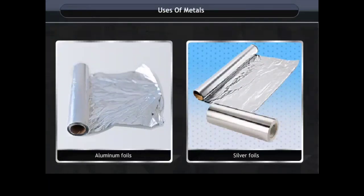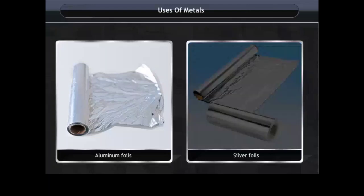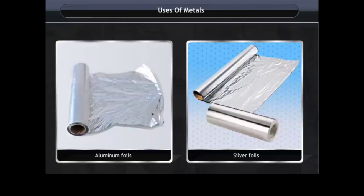Metals are malleable, hence they can be hammered into very thin sheets. For example, silver and aluminum foils are made by hammering these metals. Silver foils are used for decorating food items, whereas aluminum foils are used for wrapping food items such as chocolates and many such materials.